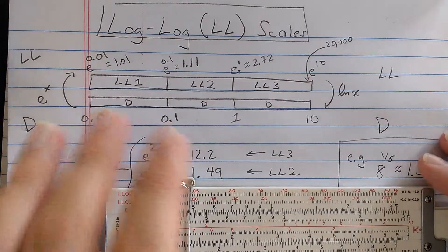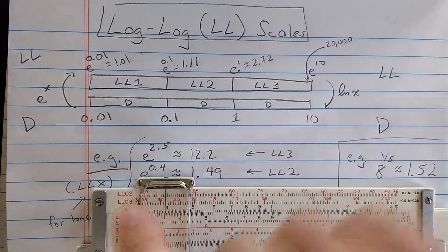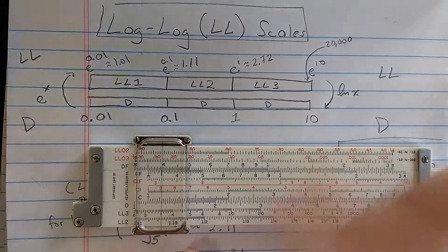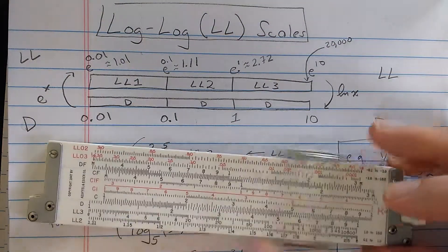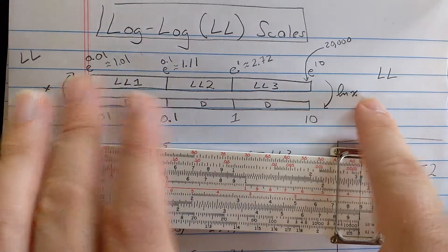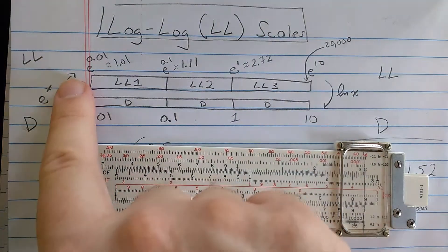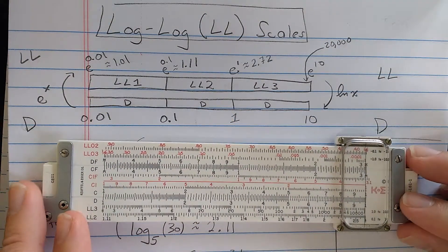Let's look at the log-log scales for positive base first. These are the ones without the zero. So they're the ones down here, LL3, LL2, and LL1, which is on the reverse of this slide rule. These really form one nice long scale, which could be continued in either direction.